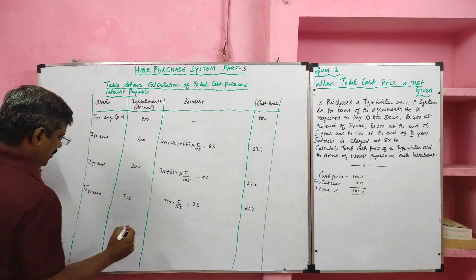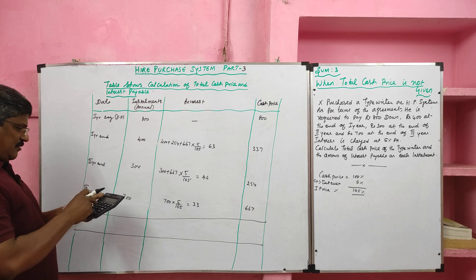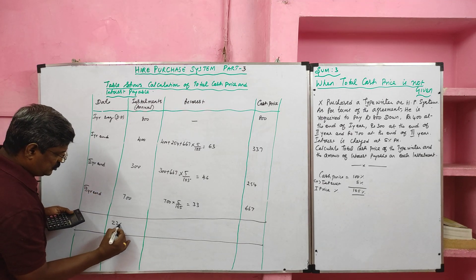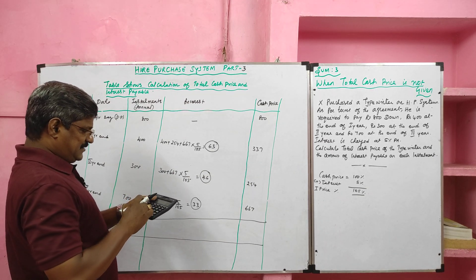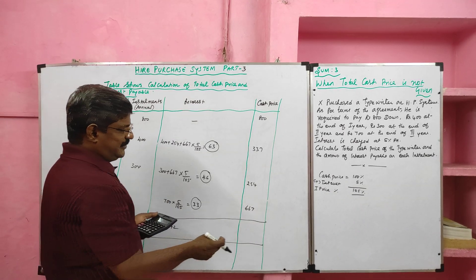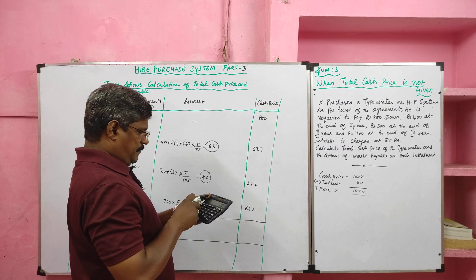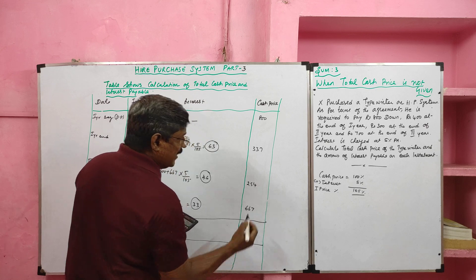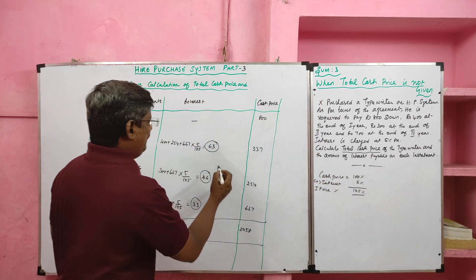In the down payment, no interest is included. Now we will total the columns. Total installments: 800 + 400 + 300 + 700 = 2200 rupees. Total interest: 63 + 46 + 33 = 142 rupees. Total cash price is calculated by adding the cash price components: 800 + 337 + 254 + 667 = 2058 rupees. The question required two answers: total cash price of the typewriter is 2058 rupees, and the amount of interest payable on each installment, both of which we have calculated.